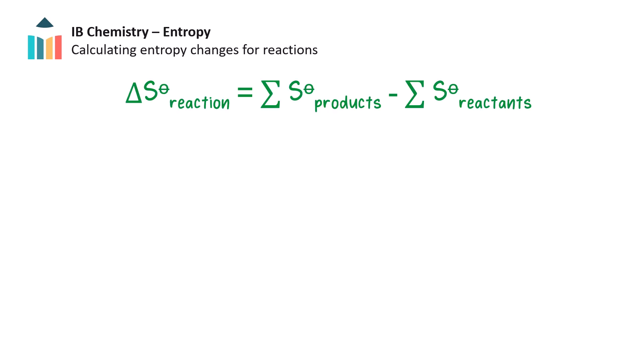The standard change in entropy during a reaction can be calculated using this equation: the sum of all standard entropies for the products minus the sum of all standard entropies for the reactants.